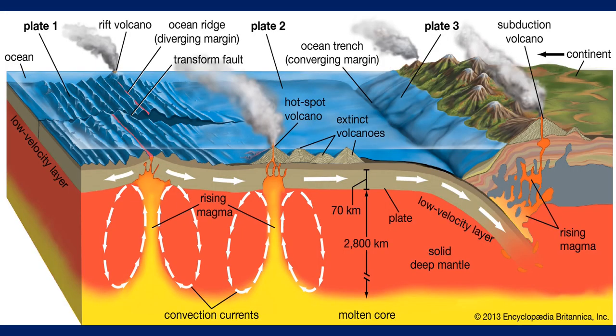A volcano mountain is formed by the surface eruption of magma from within the Earth's upper mantle. The magma that erupts the surface forms a lava flow that deposits ash. As the volcano continues to erupt, a new layer of lava is added to the surface, accumulating to form a mountain.